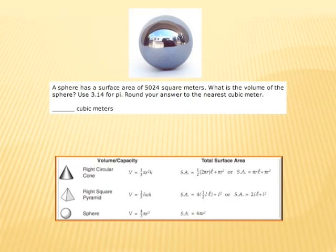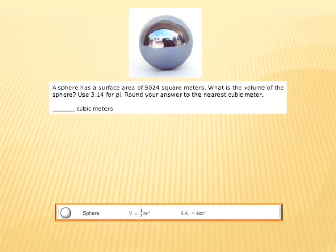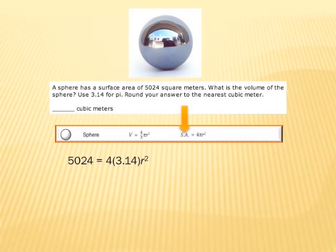If we're going to be finding the volume of a sphere and we're given surface area, we should turn to the FCAT reference sheet for help. The surface area is 4 times pi times the square of the radius. The problem tells us the surface area is 5,024 square meters, so we're given that amount to use in the formula.